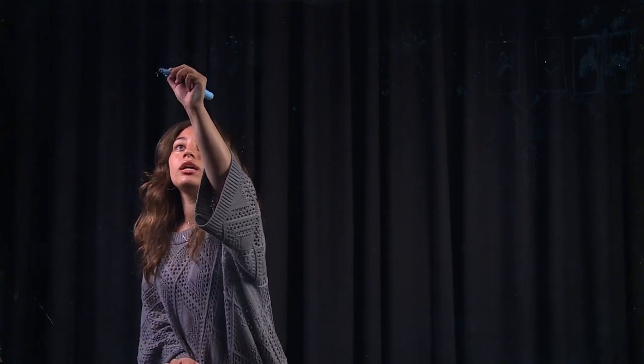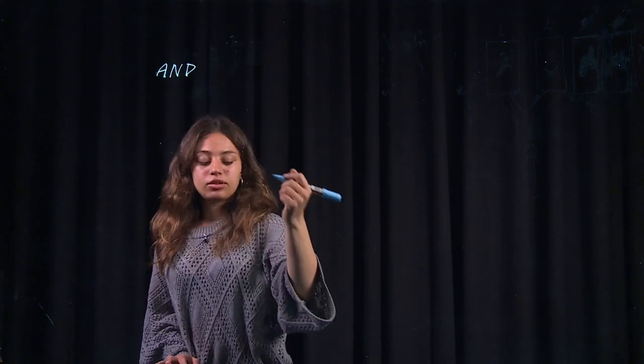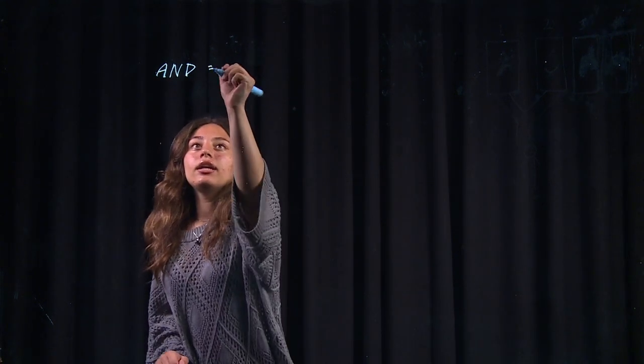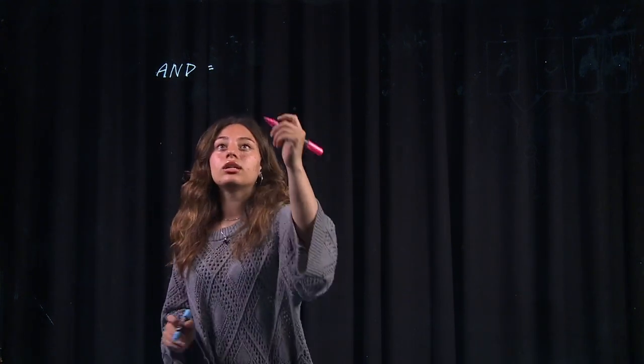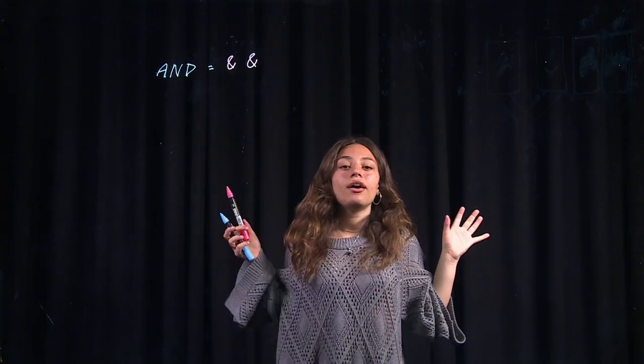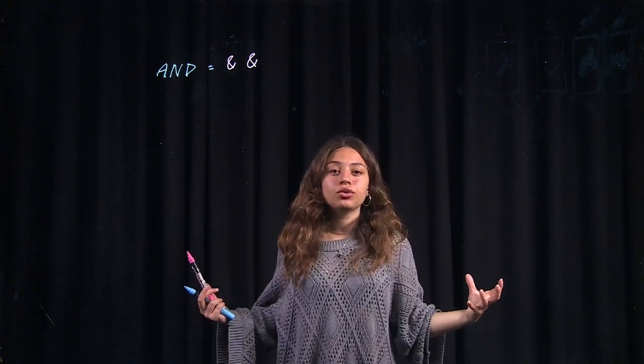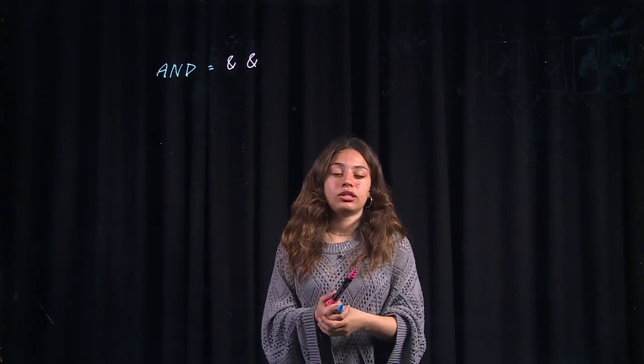Let's start with the one we just went over. So in plain English, it's called and and it looks just like that and in coding, it's going to look like two ampersand symbols just like that. So what and means is if I have two conditional statements, both of them need to be true for my entire conditional statement to be true.